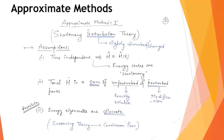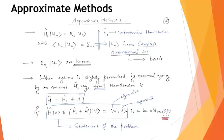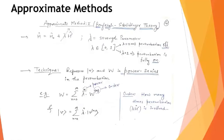The more important assumption is that the total Hamiltonian should be able to decouple into a perturbed part and an unperturbed part, where the perturbed part is assumed to be very small compared to the unperturbed part, and the unperturbed part is an exactly solvable problem. This idea of splitting the problem is the basis of the Rayleigh-Schrödinger series.